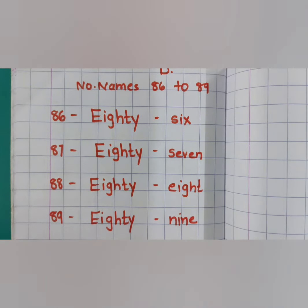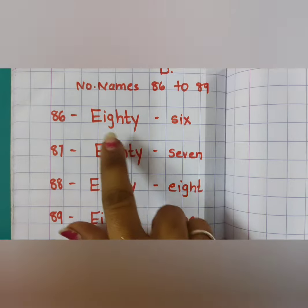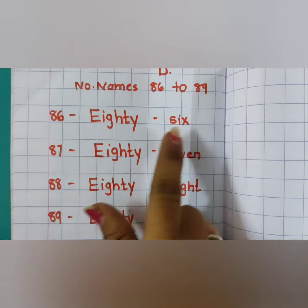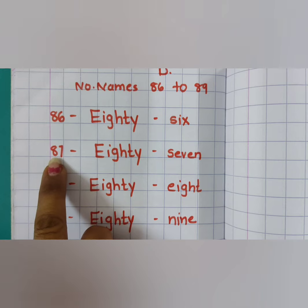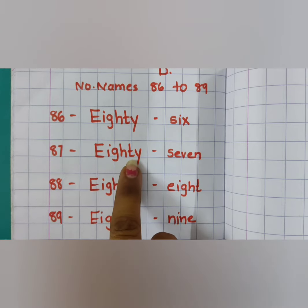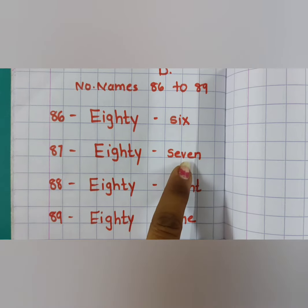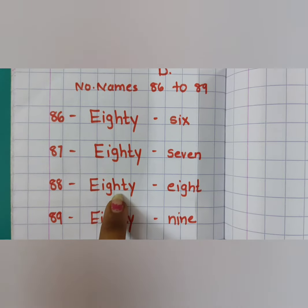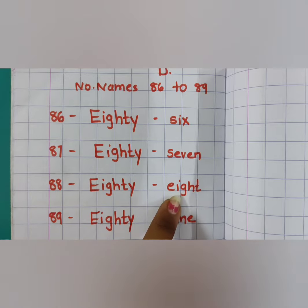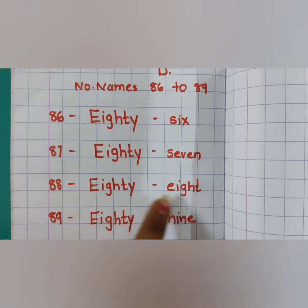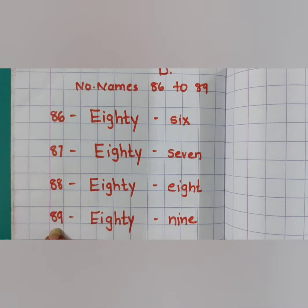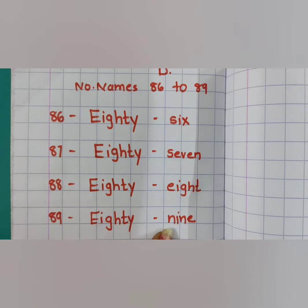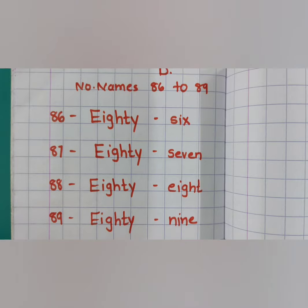85 - EIGHTY FIVE. 86 - EIGHTY SIX. 87 - EIGHTY SEVEN. 88 - EIGHTY EIGHT. 89 - EIGHTY NINE.